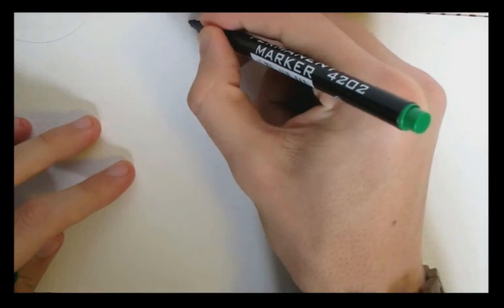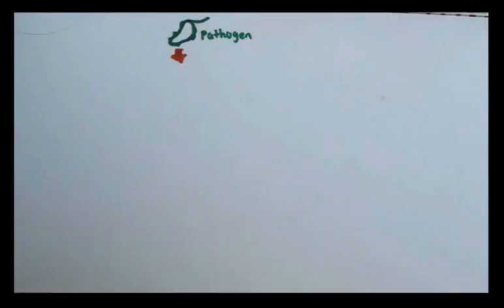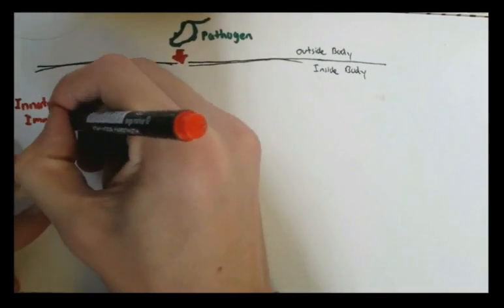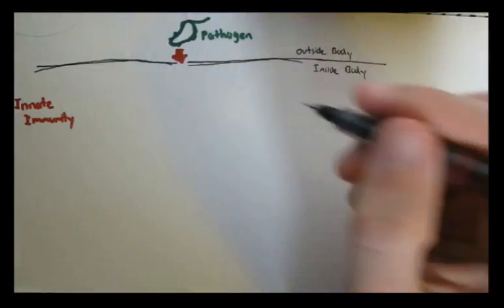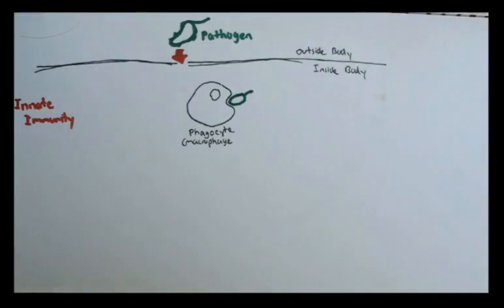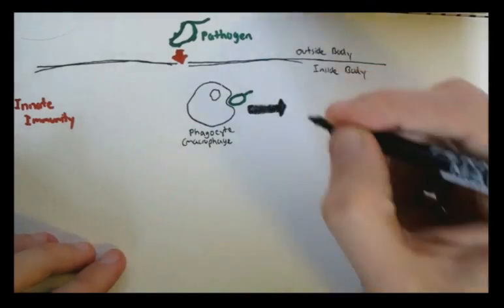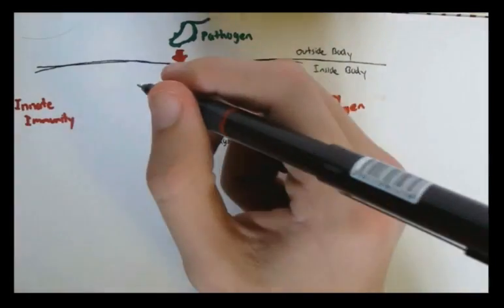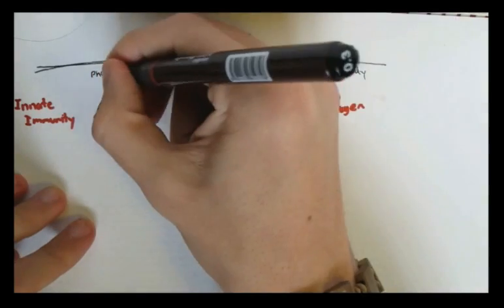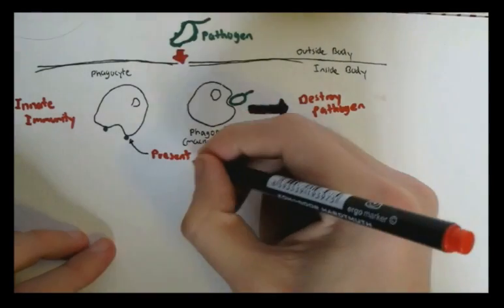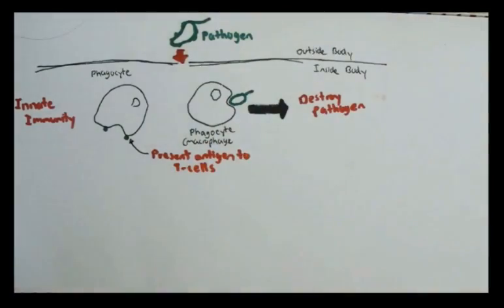When a pathogen invades a body and goes from the outside to the inside, the innate immunity kicks in. Basically, first, we can say that the phagocytes will try to consume and destroy the pathogen. Alternatively, if it can't, the adaptive immunity kicks in, and the antigen-presenting cells, such as the macrophage or dendritic cells from the innate immunity, will present the antigens of the pathogen to T-cells in the adaptive immunity.